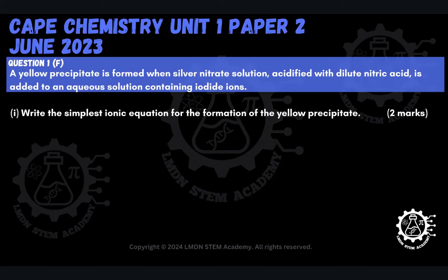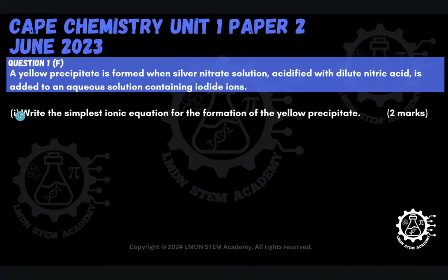We're still in Module 1, and now we're at Question 1, Part F. It reads: a yellow precipitate is formed when silver nitrate solution, acidified with dilute nitric acid, is added to an aqueous solution containing iodide ions. In Part 1, they're asking us to write the simplest ionic equation for the formation of the yellow precipitate.